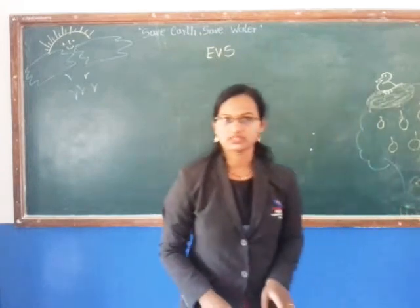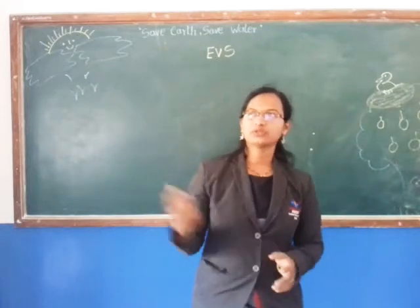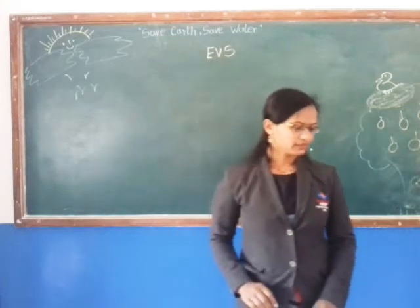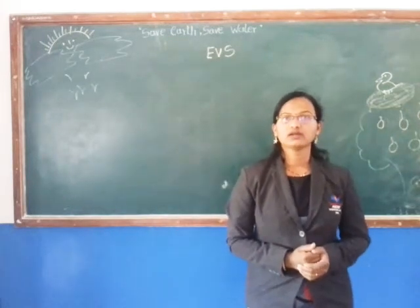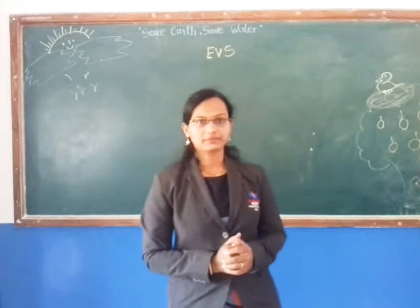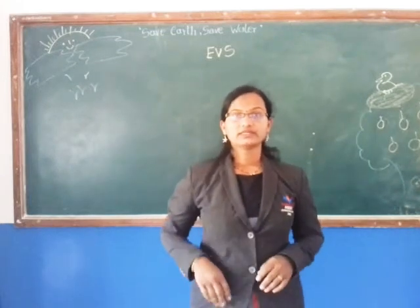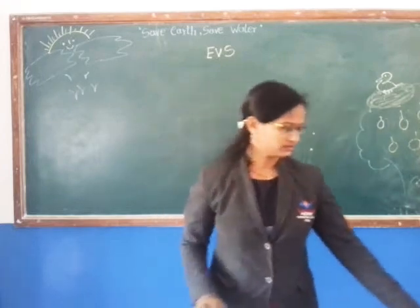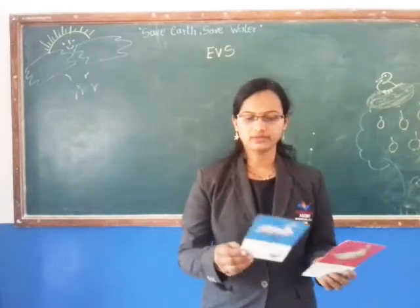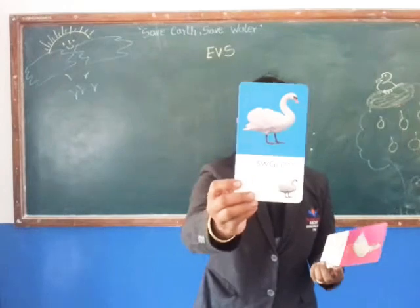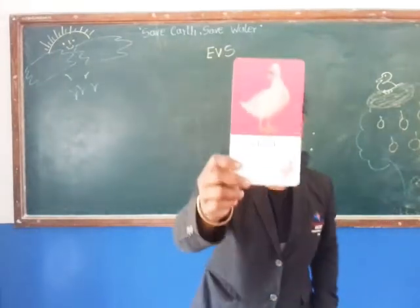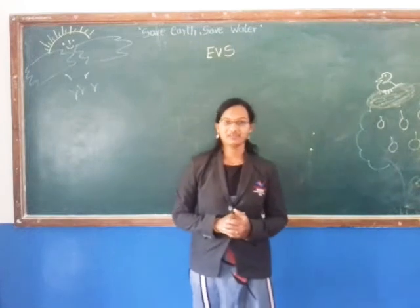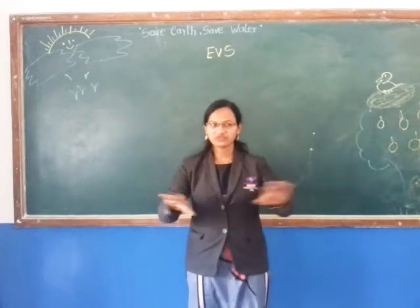These birds are flying in the sky. These birds are not flying, but these birds are swimming in the water. For example, swan and dove — these birds are swimming.